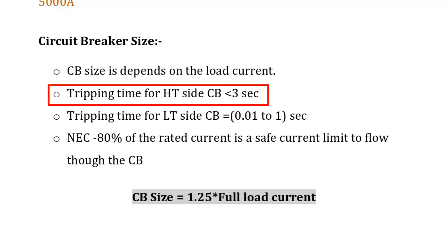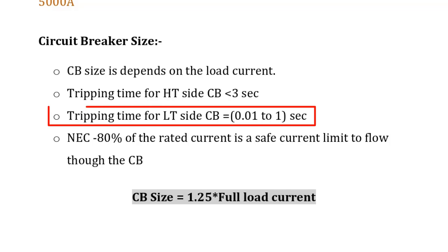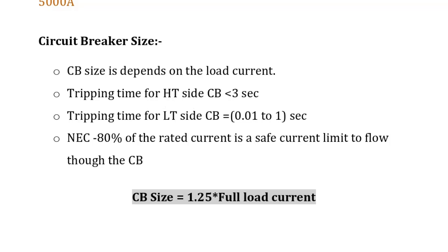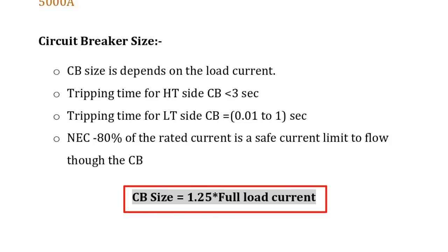The tripping time for a high voltage circuit breaker, or the primary side of the distribution transformer, should be less than 3 seconds. Similarly, the tripping time for a low voltage circuit breaker, or the secondary side of the transformer, should lie between 0.01 seconds to 1 second. The circuit breaker size formula is equal to 1.25 times the rated current, or full load current.